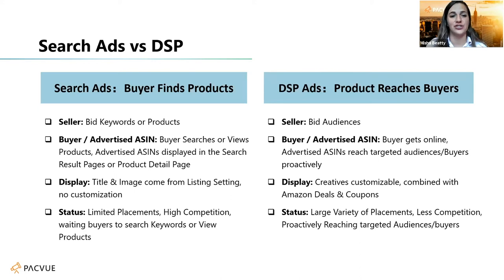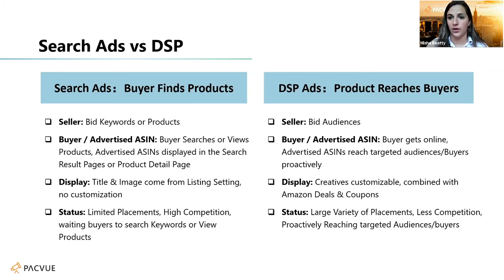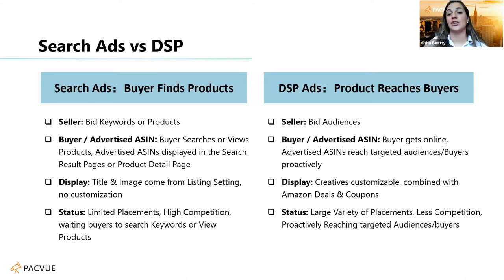There are key differences between search ads and DSP. On the search side, it's focused on bidding on keywords and products — what you type into the Amazon search bar. On the DSP side, you're bidding on specific audiences: those who have bought, viewed, or searched for a certain product, or have a certain lifestyle or are in-market within a certain time frame. So if someone looked for a product on Amazon but didn't buy it, then they're reading an article on ESPN or MSN.com, they might get an advertisement for that product to motivate them to go to the product detail page and buy.